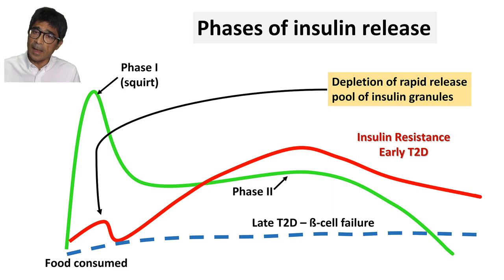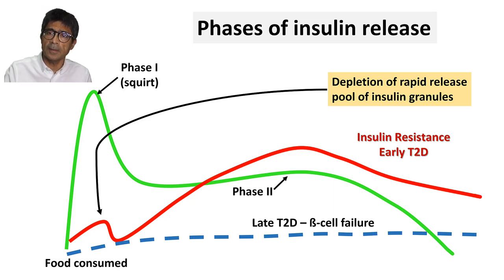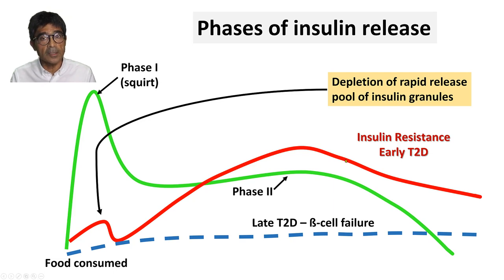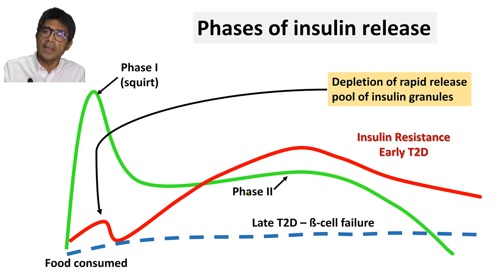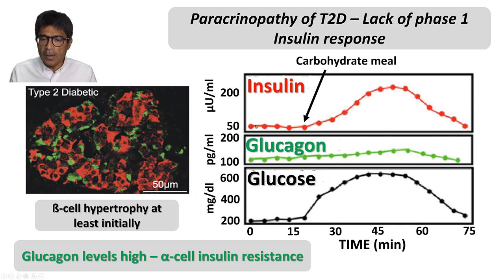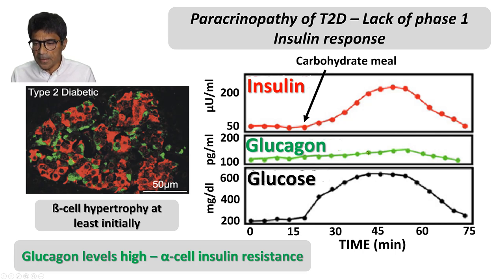One of the first things lost with hyperinsulinemia — with repeated and more frequent ingestion of carbs — is that you no longer mount the phase 1 response. Phase 1 response is gone in hyperinsulinemia and insulin resistance, even though more insulin is produced, because there is depletion of the granules present to be released in response to the initial increase in sugar. When this paracrinology is lost, the rapid release is absent, glucagon is no longer suppressed, it continues to increase, and you cannot control the sugar.